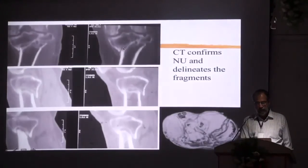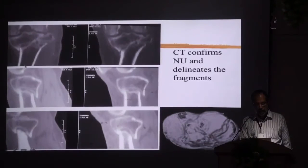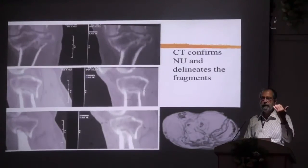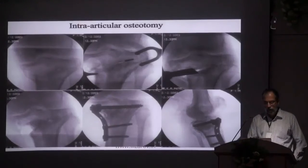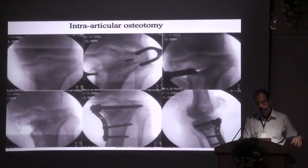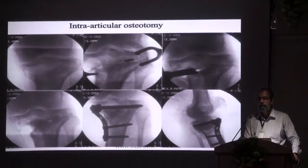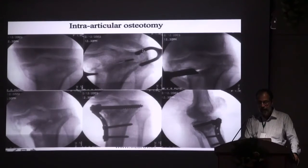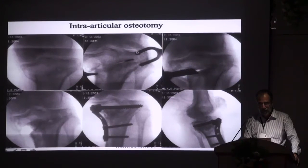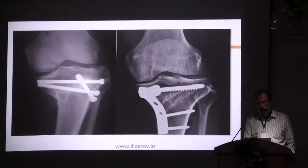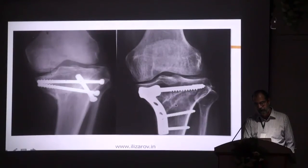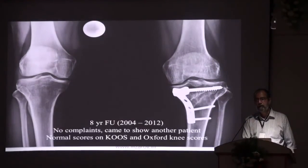The CT confirms that a lot of these areas are still not united — you can see the fracture line. When you have a CT like this, you get a mental idea of where exactly the fracture line is and how you need to go. As I mentioned, you recreate the fracture. This is not a high tibial osteotomy because this osteotomy exits somewhere here, leaving this portion as a hinge, and the whole thing is wedged open. That goes to that — and this is still in a little bit of varus.